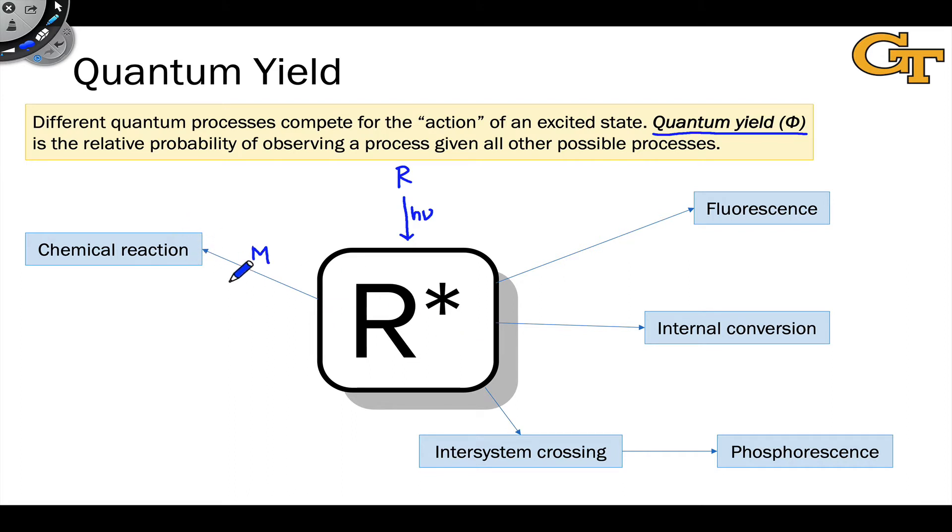Chemical reaction of R star and M, let's say it's an addition reaction that leads to a product RM, pretty straightforward. Chemical reaction can take place. However, the excited state R star has available to it a wide variety of unimolecular processes as well. All those processes that we saw on the state energy diagram.